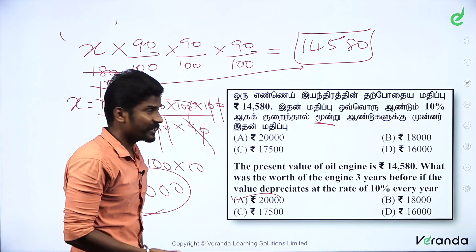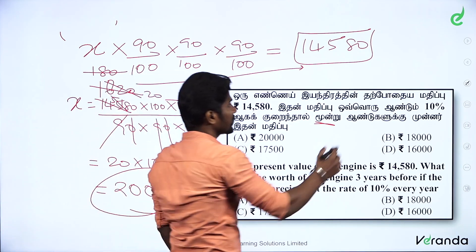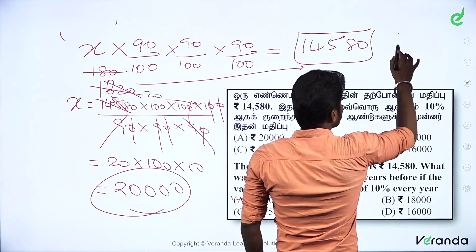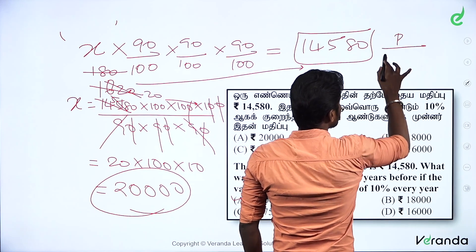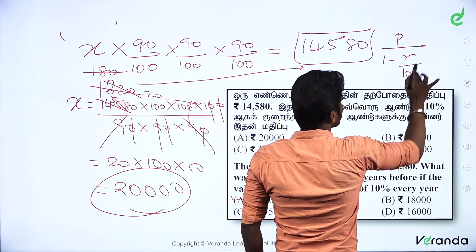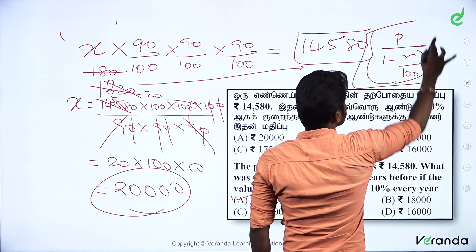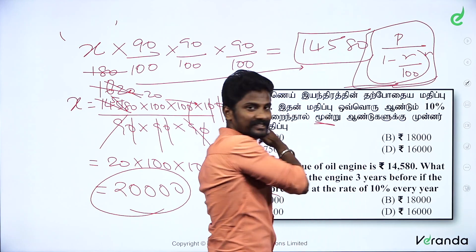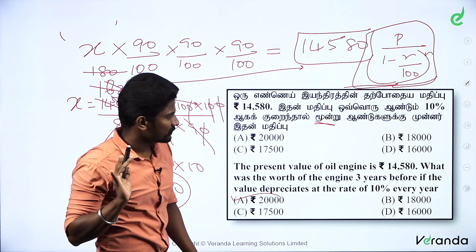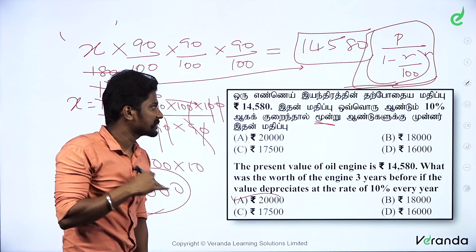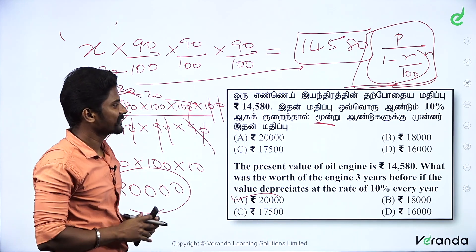The formula is: P divided by (1 minus R divided by 100) whole power N. If you substitute this formula, this answer will come. No formula — you can determine this.